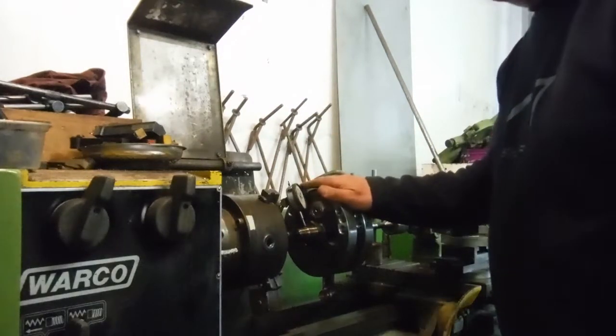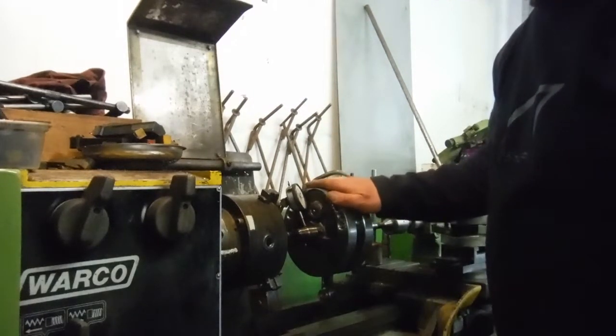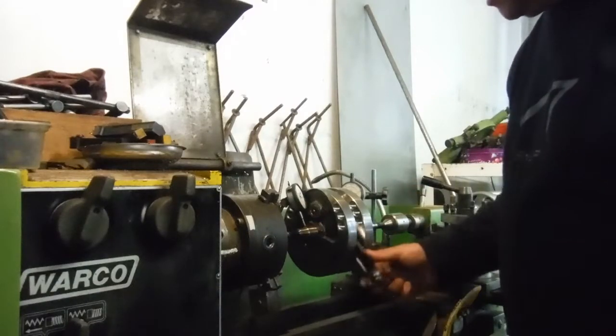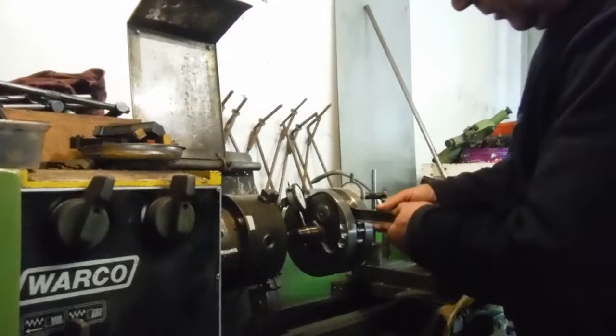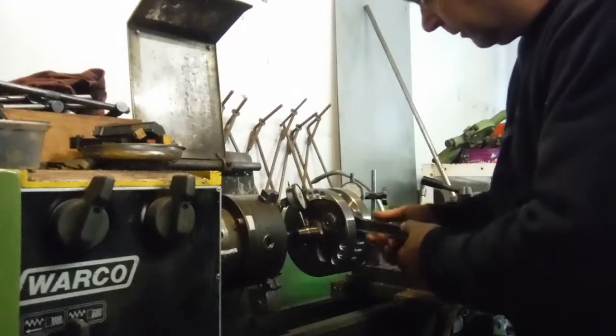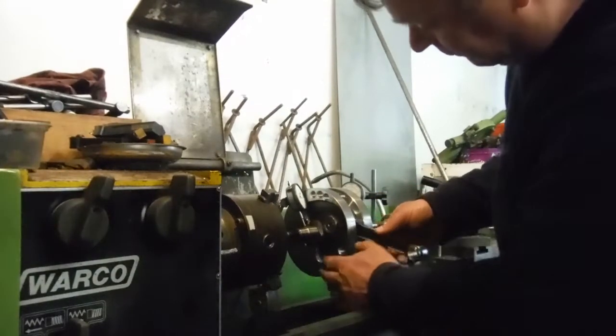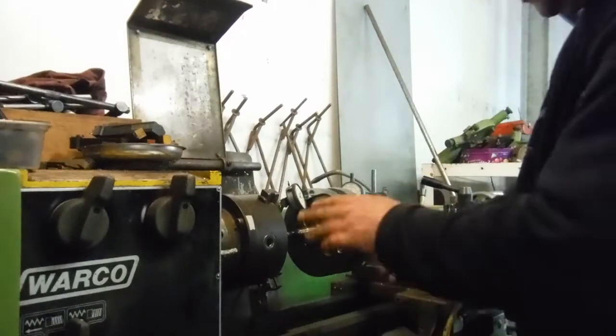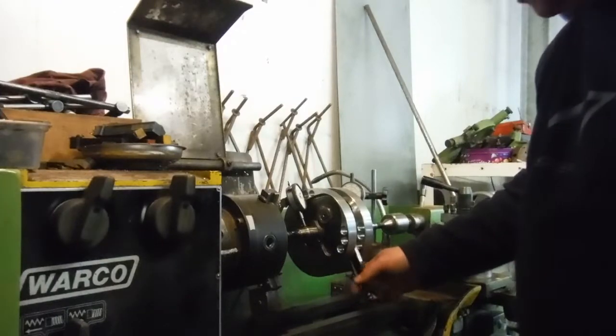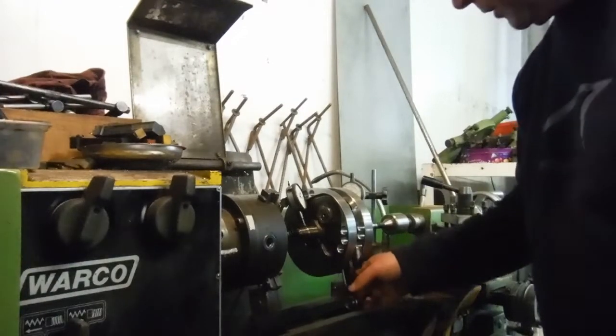This crankshaft is the latest in the ASBO series of Royal Enfield 500 cranks. This is going to be for ASBO 32 which has got a forged steel con rod with a roller big end in it. I've lightened the flywheels and rebalanced them as usual and I've got it set up now so that I can check for run out and we'll have a look at that now.